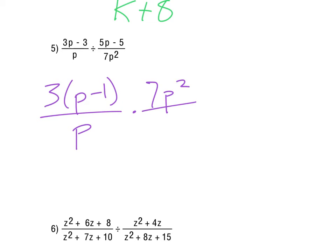So 7p squared ends up on top, the 5p minus 5 ends up on the bottom, and then we get p minus 1, once we take the 5 out.